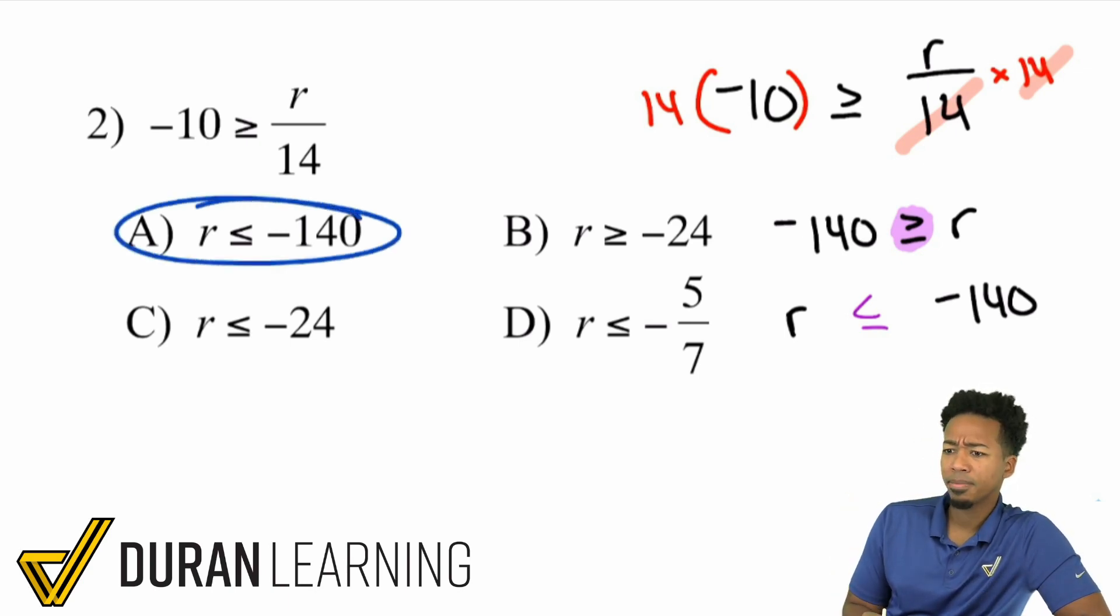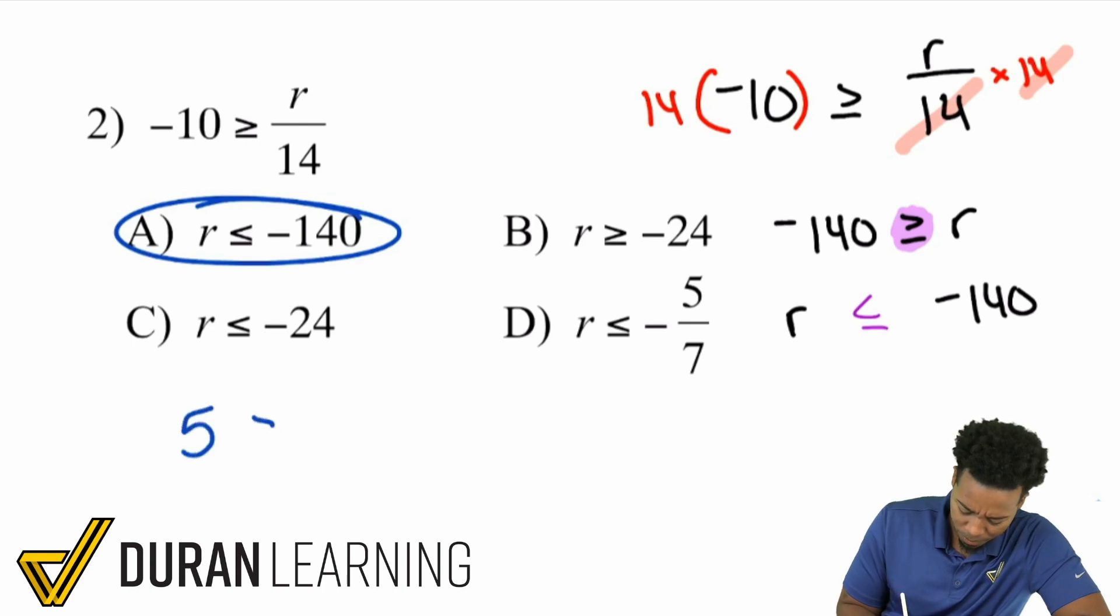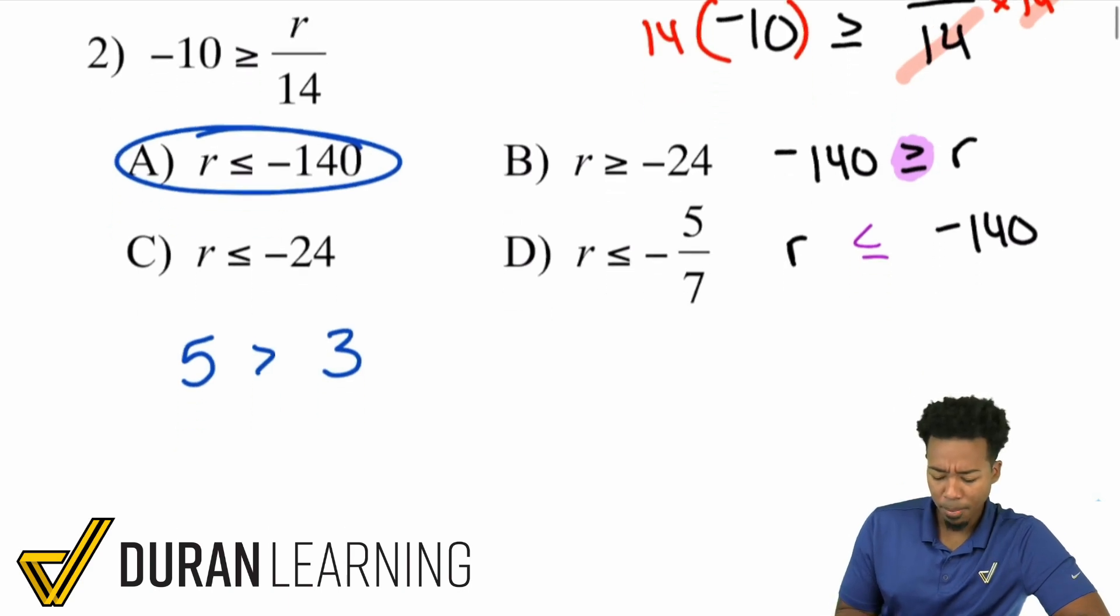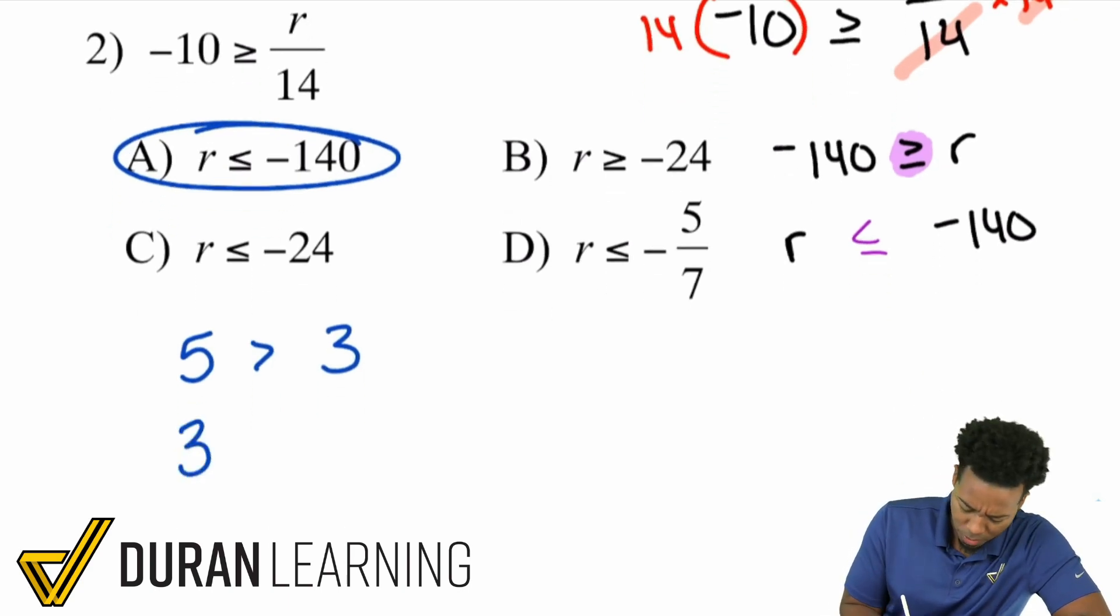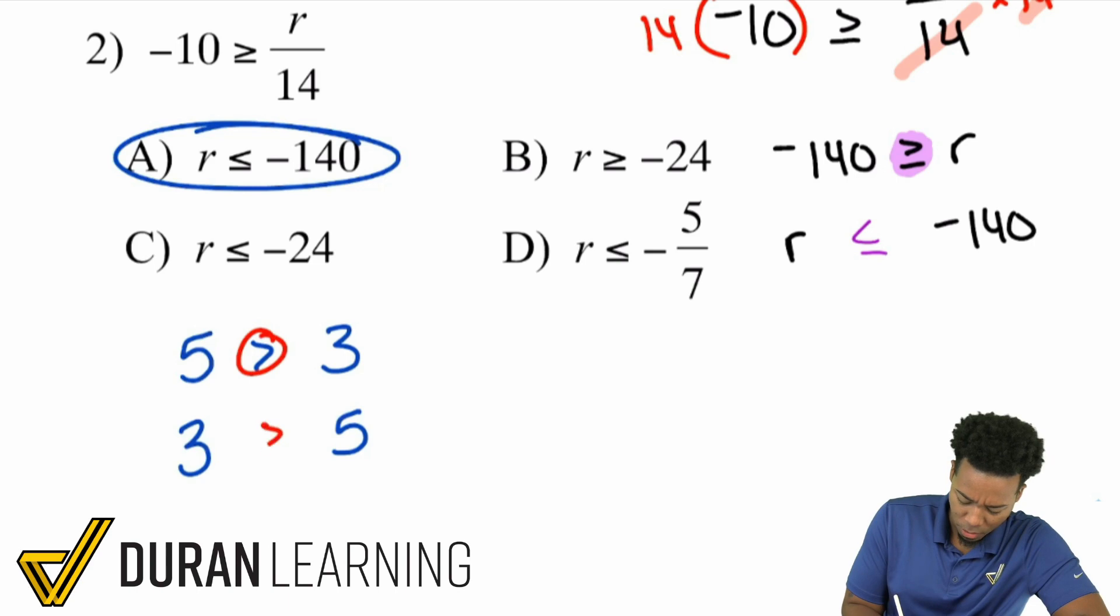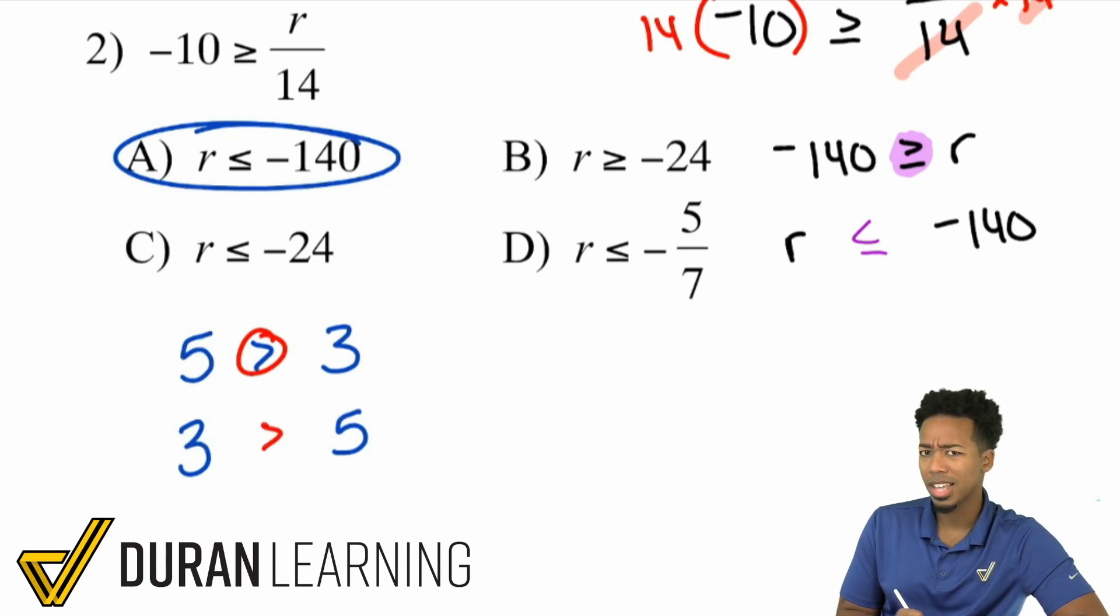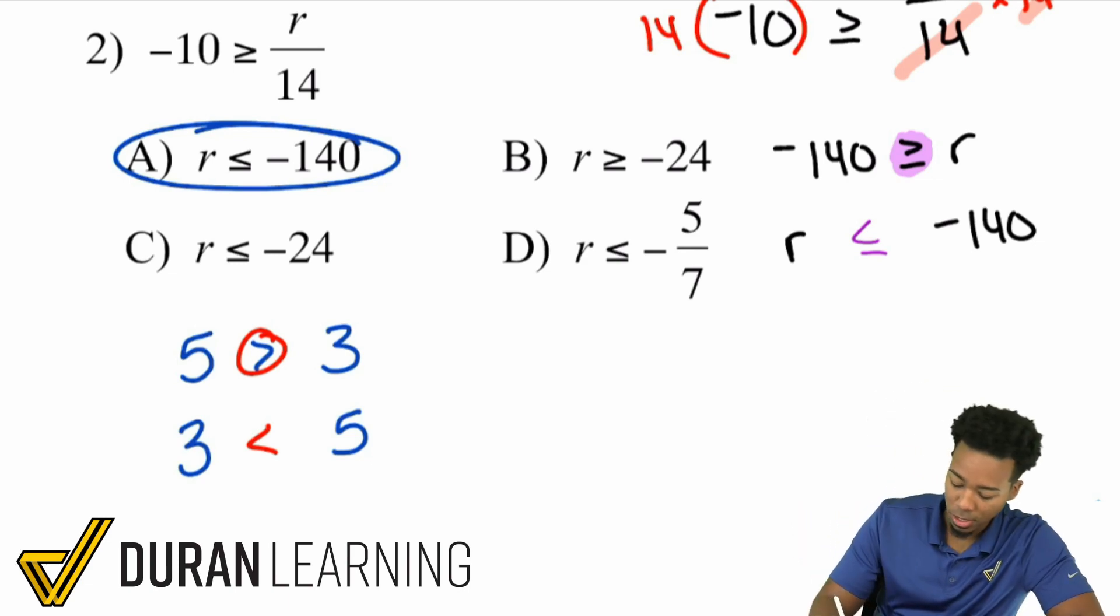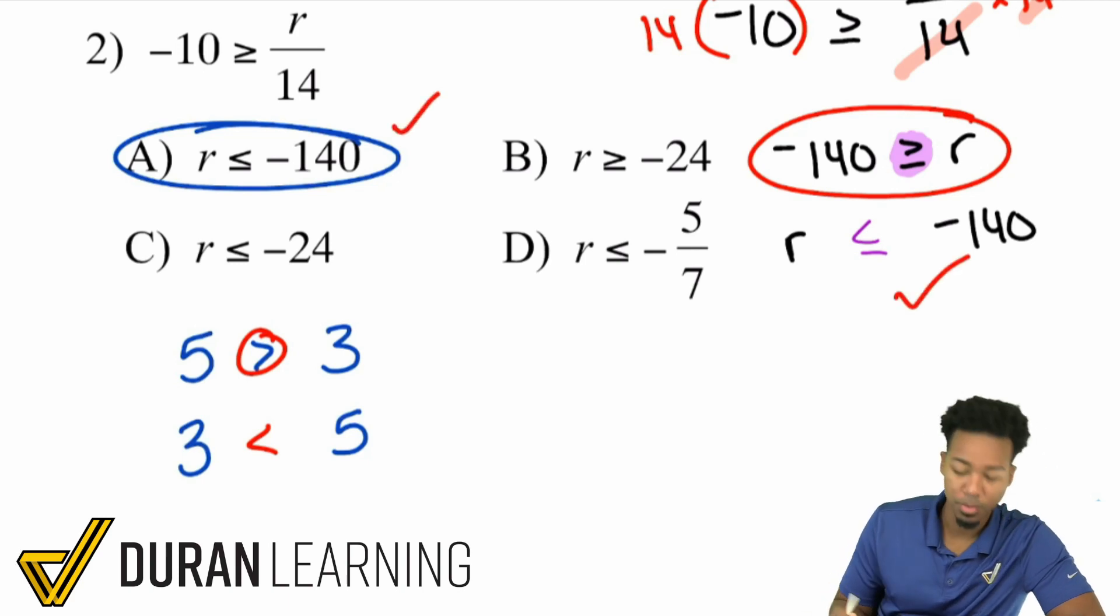If I were to say, hey, 5 is greater than 3. That's a true statement, right? 5 is bigger than 3. But what if I were to go ahead and flip it and put 3 over here and 5 over here? If I were to flip it, well then, if I kept the same symbol, if I were to keep the greater than, that's not true. 3 is not greater than 5. And so you're going to have to, again, flip the symbol if you swap the sides. Again, if you swap the sides, you swap the symbol. And so that's how you can easily go from this to the correct answer. And right there, you're good.